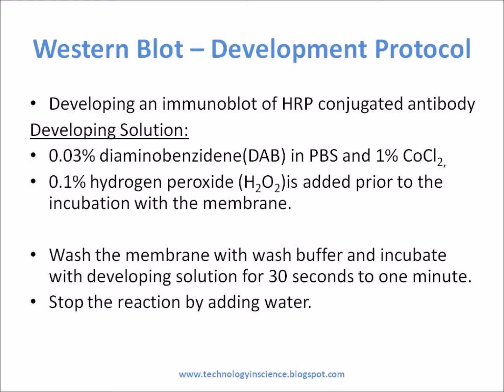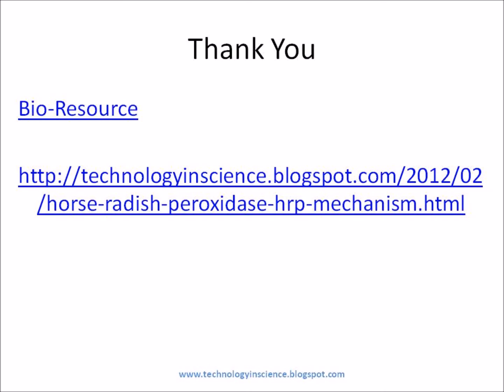DAB reacts with HRP in the presence of peroxide to yield an insoluble brown colored product at locations where peroxidase-conjugated antibodies are bound to the target protein. The reaction can be stopped by adding water.